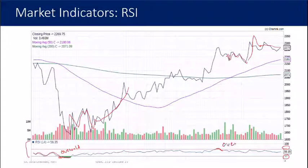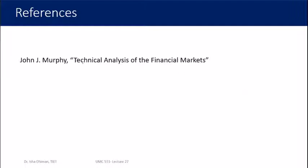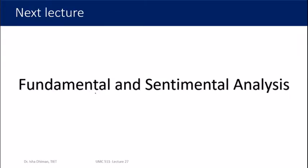Those are the three main indicators. There are many more, but it is better to practice a smaller number of indicators well rather than using many at once. For a thorough understanding, the book 'Technical Analysis of the Financial Markets' by John J. Murphy is highly recommended — it covers technical analysis in exceptional detail. In the next lecture we will focus on fundamental and sentimental analysis.